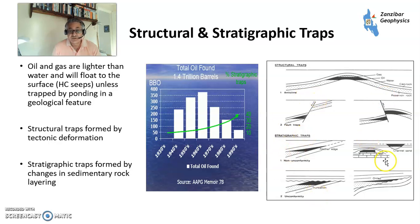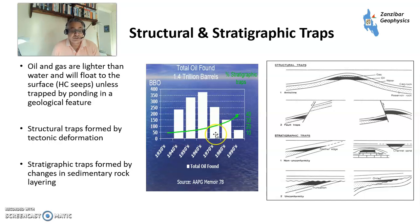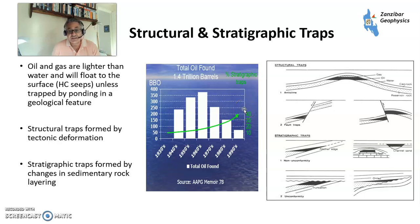The two main types of trap are structural traps, formed by tectonic deformation, and stratigraphic traps, caused by changes in rock layering. Back in the old days you would just drill an anticline and it would work — that's when giant fields in places like Saudi Arabia were discovered. But we're running out of structural traps. The percentage of successful discoveries from stratigraphic traps is now 40–50%, so it's roughly half and half. Stratigraphic traps are more subtle and more difficult to image.